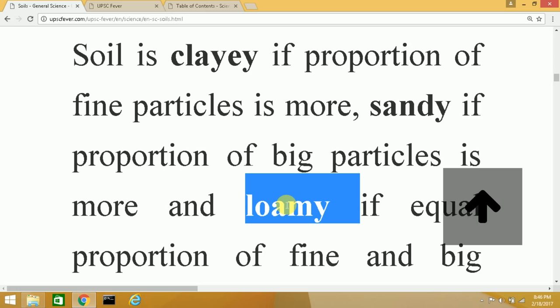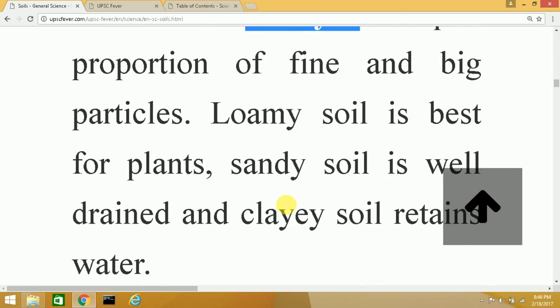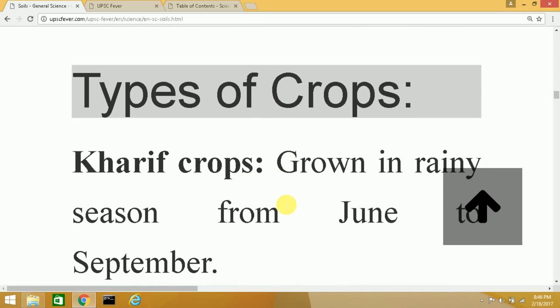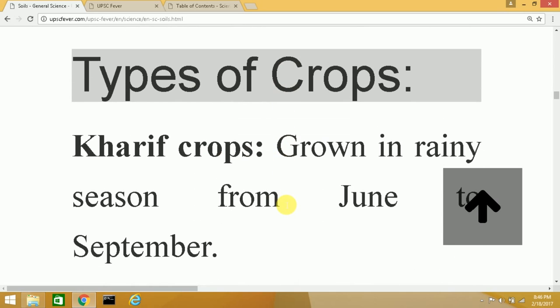There are mainly three types of crops grown in India based on which season they are grown in. The first type is the Kharif crop. These are grown in the rainy season from June to September, and around 60% of India's crops are Kharif crops. 60% of the total agricultural output comes from the Kharif season.